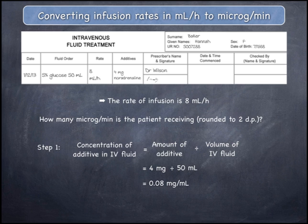This has been expressed in mg per mL and should be changed to micrograms per mL, because the final result we require is expressed in micrograms per minute rather than mg per minute. To do this, multiply by 1000 micrograms per mg, giving a concentration of noradrenaline in the IV fluid of 80 micrograms per mL.